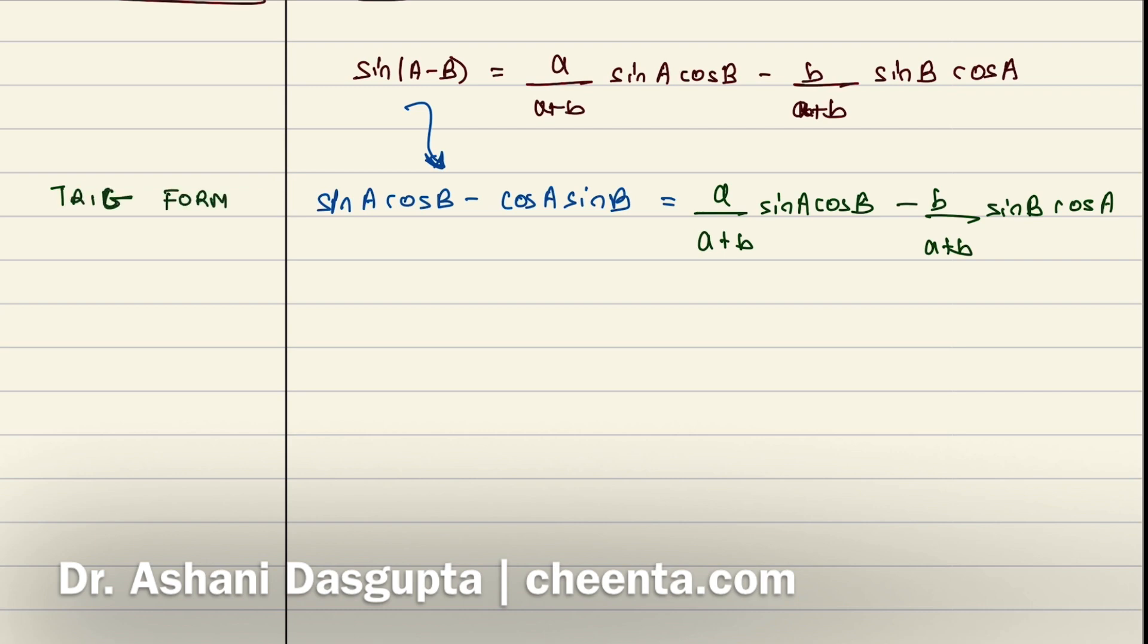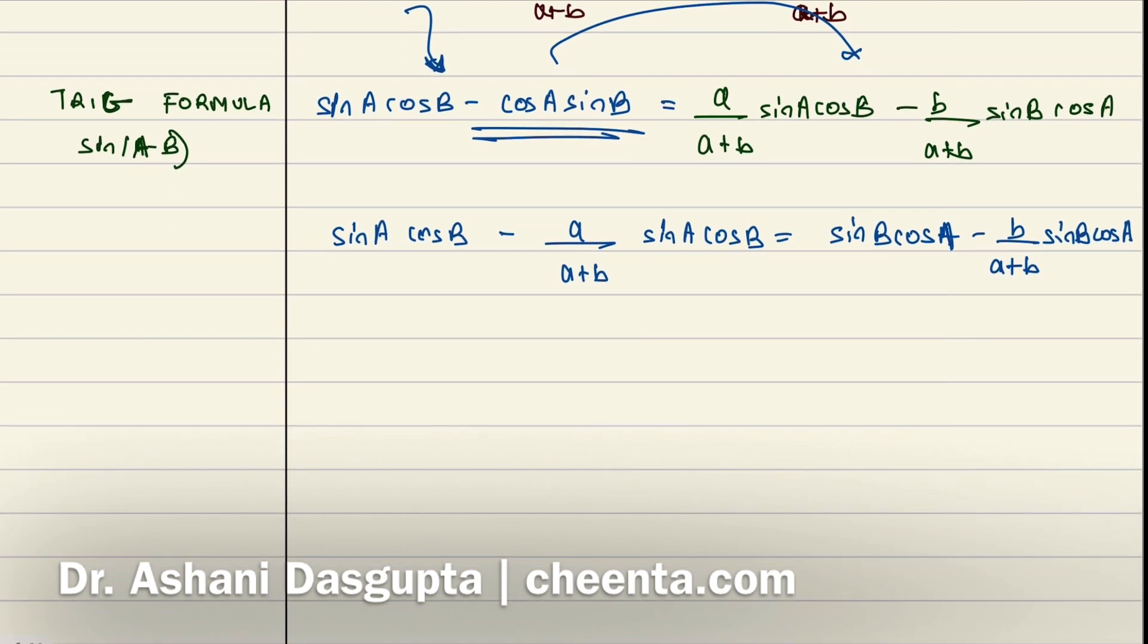Now let's group the like elements together. So we have sinA cosB - a/(a+b) × sinA cosB, this is equal to sinB cosA - b/(a+b) × sinB cosA. All right now we can simplify this. So if we do that we have sinA cosB × (1 - a/(a+b)) equals (1 - b/(a+b)) × sinB cosA.